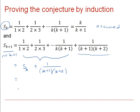Now, this is where we can use our assumption. We have assumed that Sk equals k over k plus 1. So we are using our previous assumption, and then we have, obviously, the extra term.